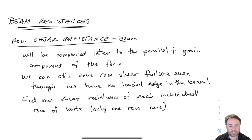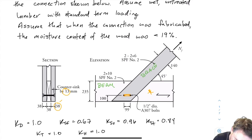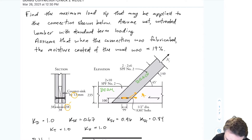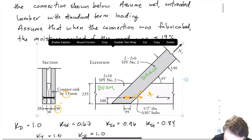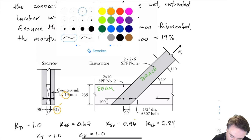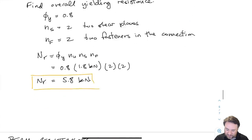We still have row shear in this connection even though we don't have a loaded edge. Looking at the beam, the rows run horizontally and we have shear planes, and we can fail the plug between the two bolts as the bolts want to move in the horizontal direction — which is the horizontal component of the diagonal force. Failure of that shear plug between the two bolts causes failure of the connection. We'll also have some local embedment failure, which is accounted for in a roundabout way by assuming there are two shear plugs that have to fail instead of one.